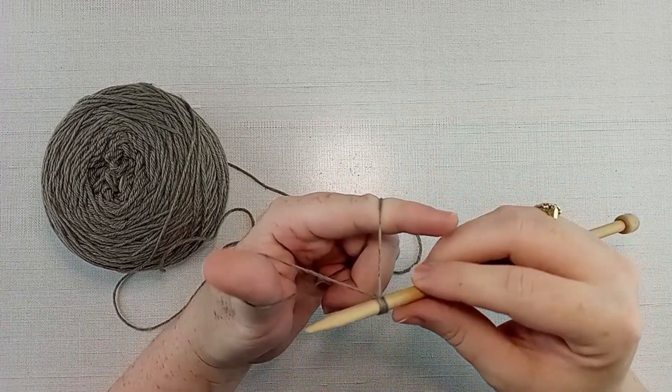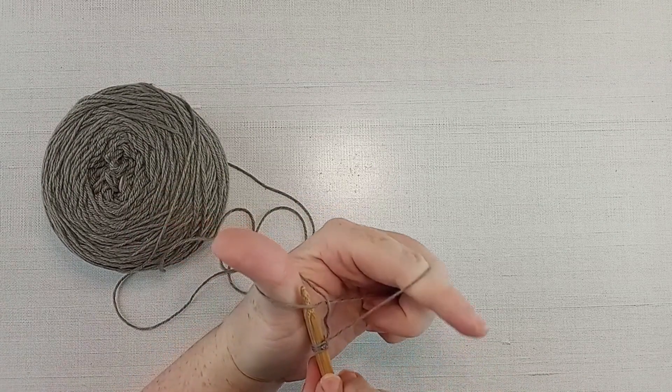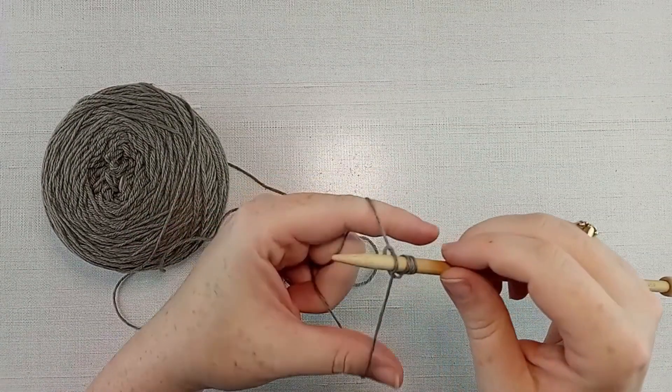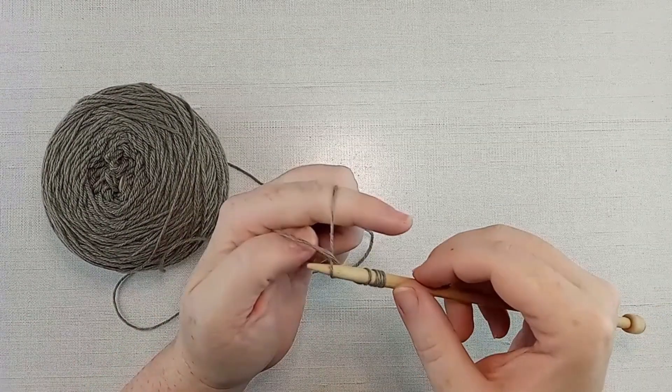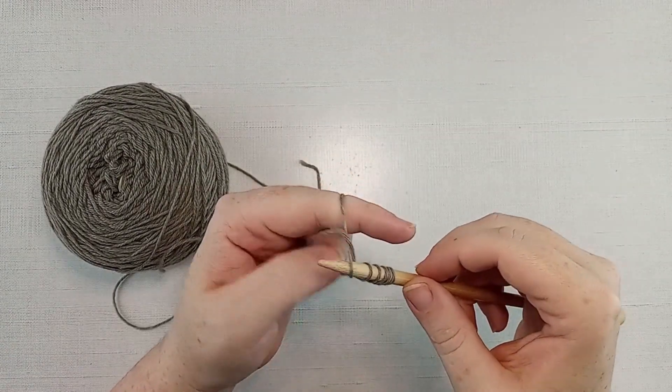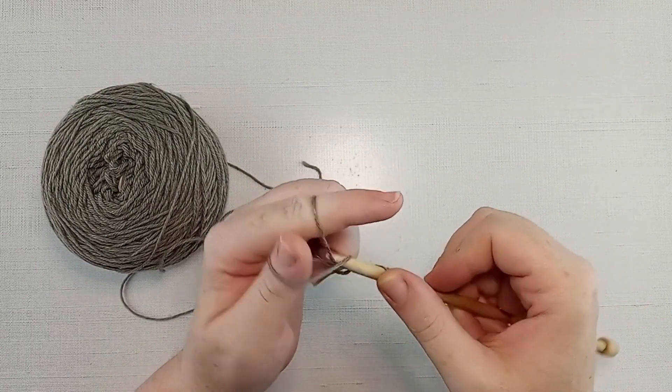And again, needle to the front, there's that hole, through the hole, grab the working yarn, tighten. You can get pretty quick at this as long as you maintain an even tension on those tails in your hand. You can do this pretty quick.